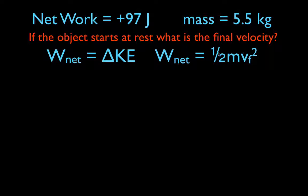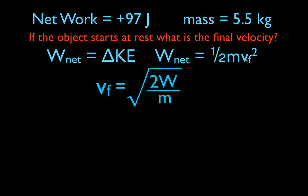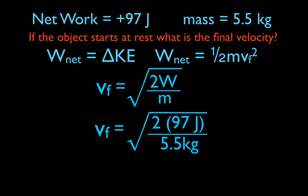The equation for kinetic energy is ½mv², where f denotes the final velocity. We want to solve for the final velocity: v_final = √(2W / m). To solve for the velocity, multiply both sides by 2 to get 2W, then divide by the mass, then take the square root of both sides. That gives v_final = √(2 × 97).